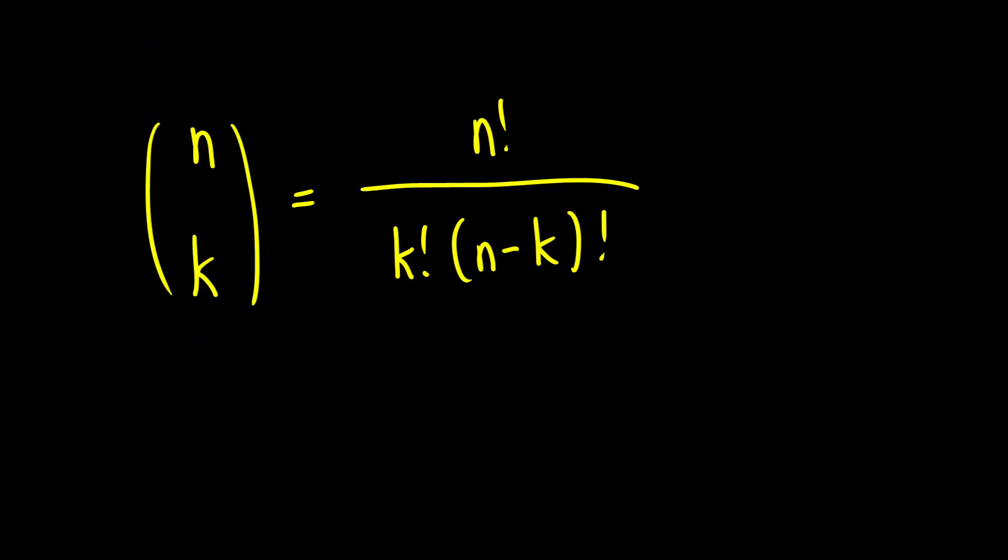So we do get a formula for this. This is the n choose k. So this right here is read as n choose k. So in the problem that we were just doing, we had three people and we were choosing two of them. So we would have written this as three choose two. Now, how this works is we take n factorial.